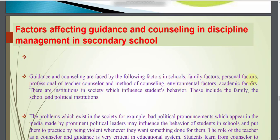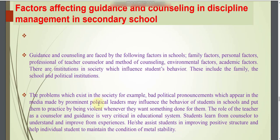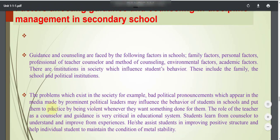Factors affecting guidance and counseling in discipline management in secondary schools include family factors, personal factors, professional competence of the teacher-counselor, method of counseling, environment factors, and academic factors. Institutions in society such as the family, school, and political institutions influence student behavior. The role of the teacher as a counselor is very critical; they assist students in improving positive structure and maintaining mental stability.